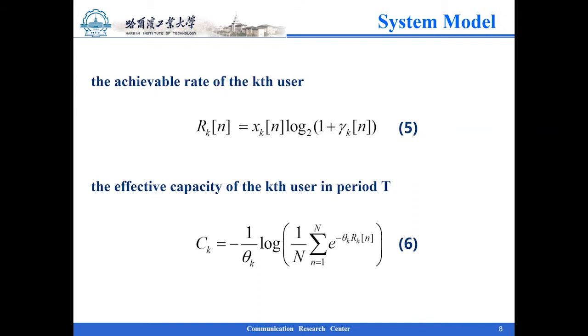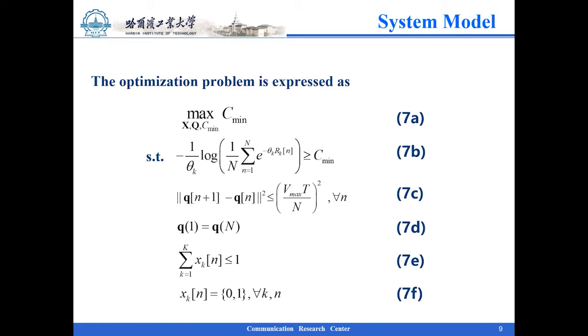The objective function is to maximize the minimum effective capacity among all users. Assuming that the location of the ground user is known, the optimization problem is expressed. The left side of 7b is neither convex nor concave for variable q or variable x. Meanwhile, the variable x in 7f is a binary discrete variable. Thus, 7f has the same phenomenon with 7b. Based on this, we try to adopt the SCA technique and BCD method to solve these problems.